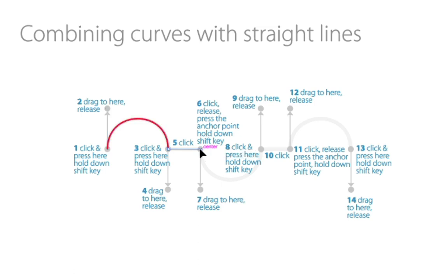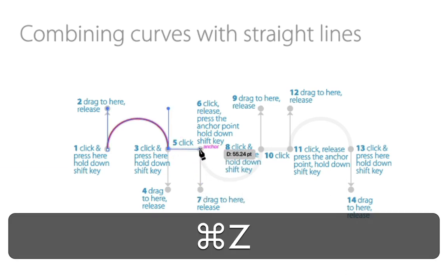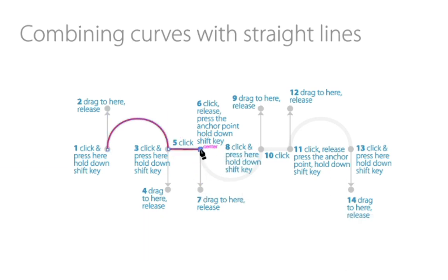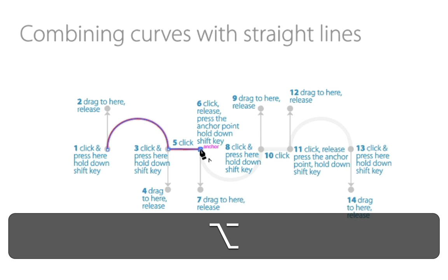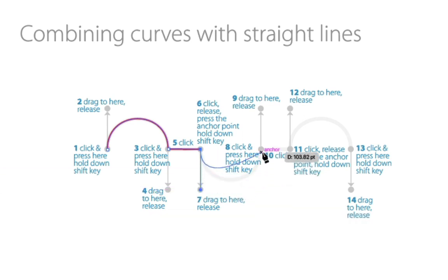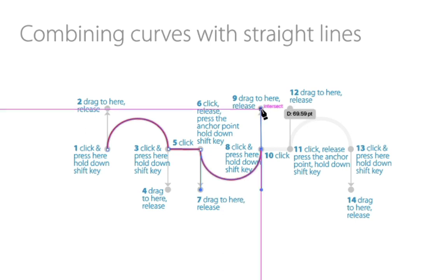Now we're going to click and we're not going to drag down there. We're going to click and let go, and now hold down the Option key. We're changing the next line — we're not drawing, we're dragging down a handle so that we get that. Press down, drag up, let go.